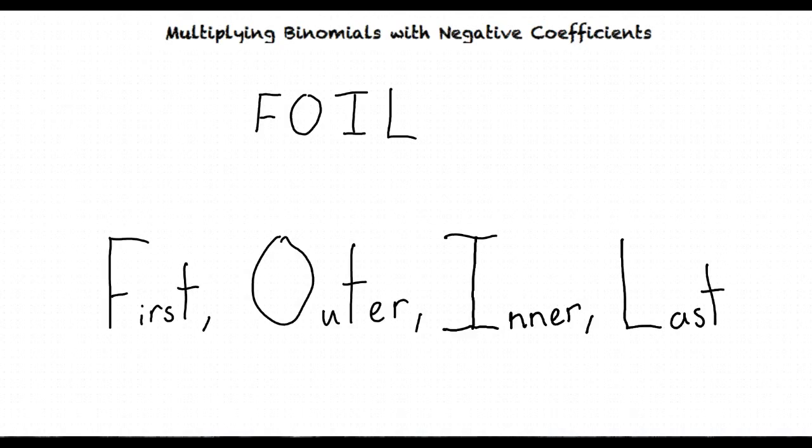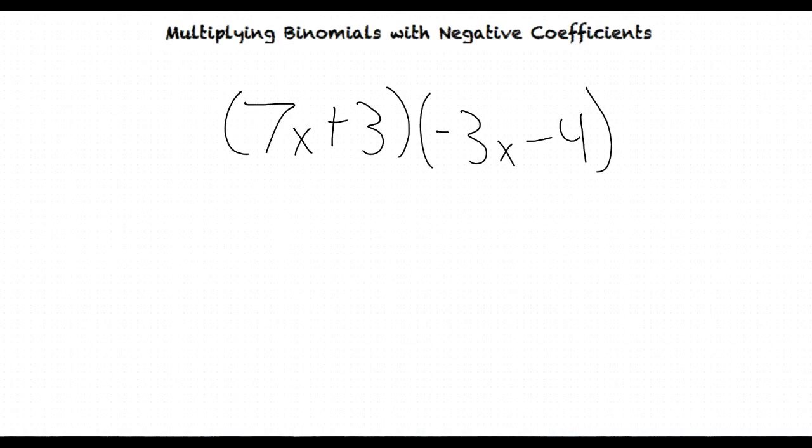We'll be going over how to use the FOIL system in this video, but if you want more practice on this concept, look back to previous videos regarding this system. For our first example, we'll be using the binomial set 7x plus 3 times negative 3x minus 4.